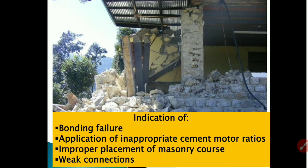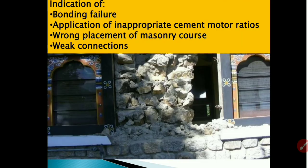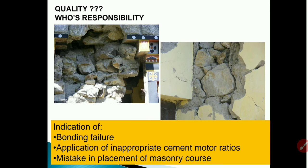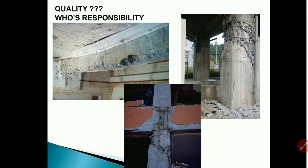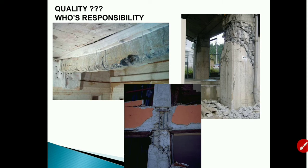This is an indication of bonding failure — there is no bond between the bricks and the materials. The main causes are application of inappropriate cement mortar ratios, improper placement of masonry cores, and weak connections between bricks. These are the best examples of poor quality resulting from negligence in following specifications.